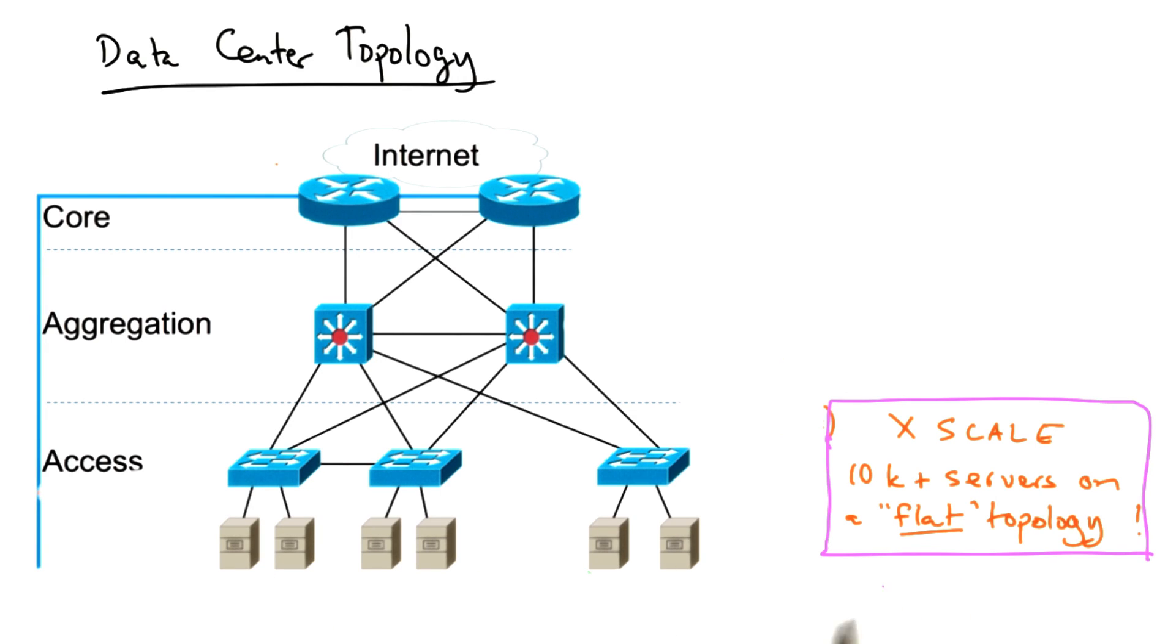Recall that the scale problem arises because we have tens of thousands of servers on a flat layer two topology, where all of the servers have a topology independent MAC or hardware address. And thus, in the default case, every switch in the topology has to store a forwarding table entry for every single MAC address.